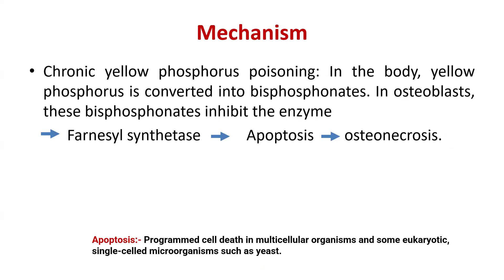The mechanism: in chronic yellow phosphorus poisoning, yellow phosphorus is converted into bisphosphonates in the body. In osteoblasts, these bisphosphonates inhibit the enzyme farnesyl synthetase, leading to apoptosis — programmed cell death — and subsequently osteonecrosis.